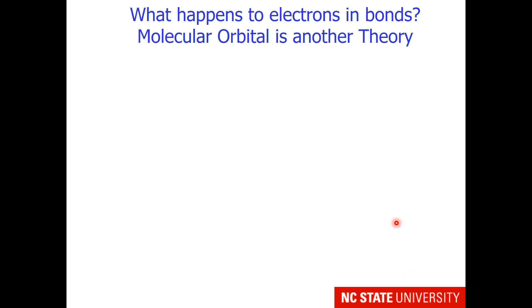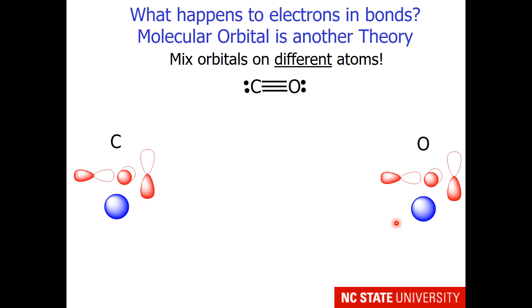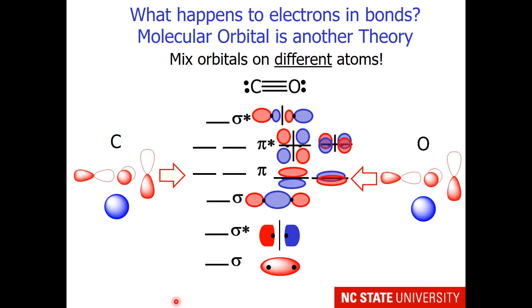Here's another way to describe what happens to electrons in bonds. This is called molecular orbital theory. Instead of mixing orbitals on the same atom, orbitals are mixed on different atoms. So for example, in the carbonyl molecule, when we mix the carbon atom orbitals and the oxygen atom orbitals, this is the diagram that results.